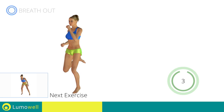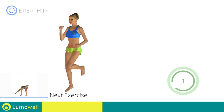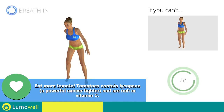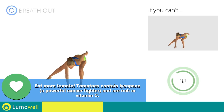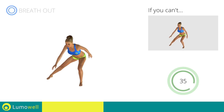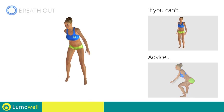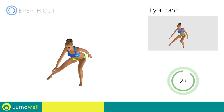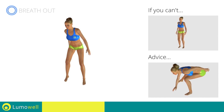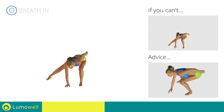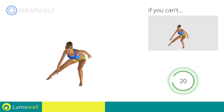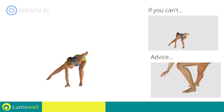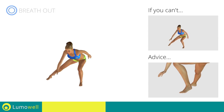Next exercise: side lunges with jump. Go! If you can't do it, try doing side lunges without jumping. Be sure not to curve your back during the movement. Do not pass the line of your toes with your knees during the descent. Do not lift your heel during the lunge — your foot must always be firmly on the floor.